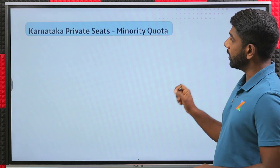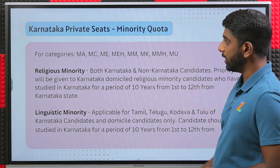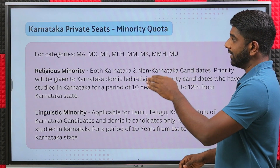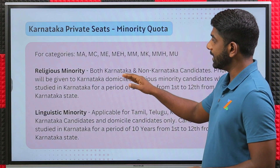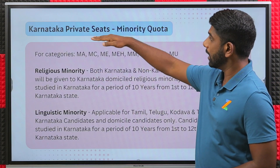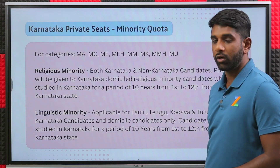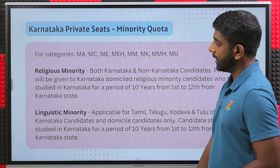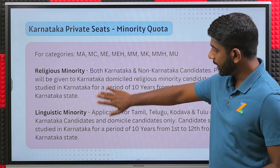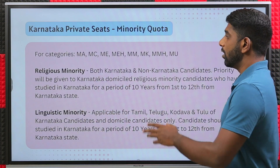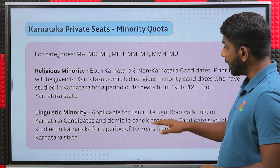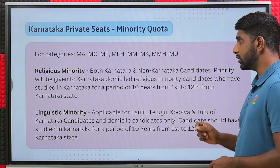Next is the Karnataka private seats minority quota. Under minority quota there are different categories — MA, MC, ME and so on. Under the minority, there are two types: one is the religious minority and one is the linguistic minority. The eligibility slightly changes here. For the religious minority, both Karnataka and non-Karnataka candidates are eligible.